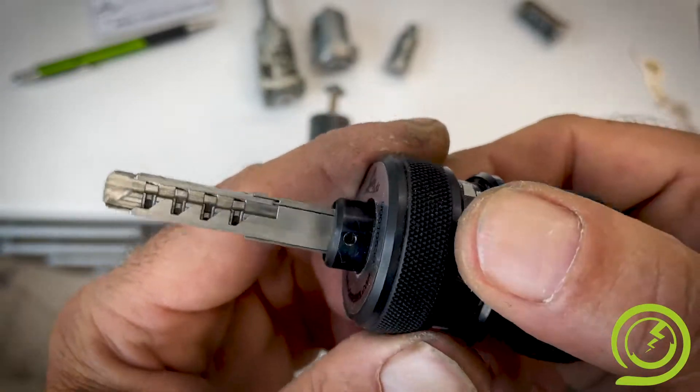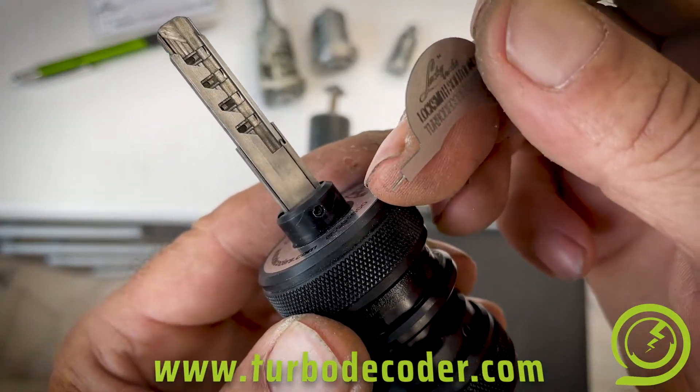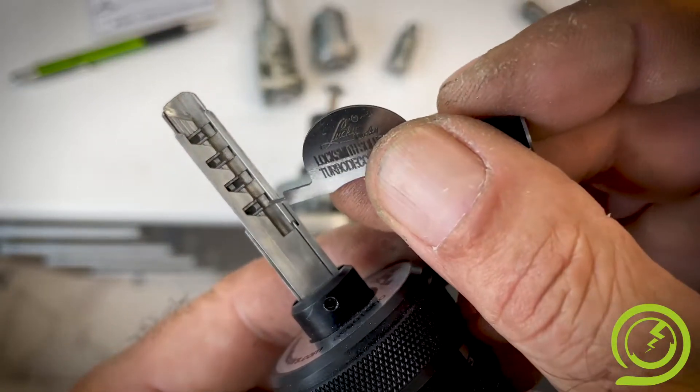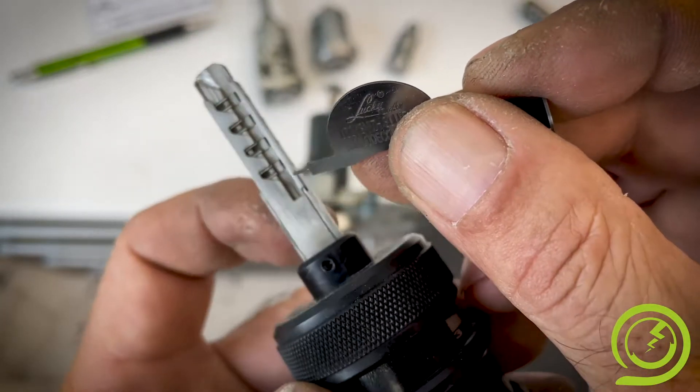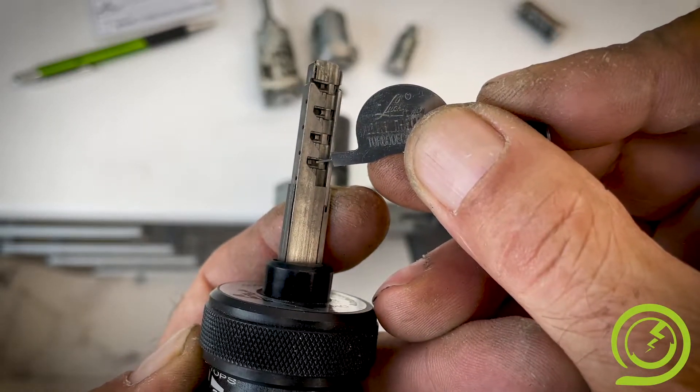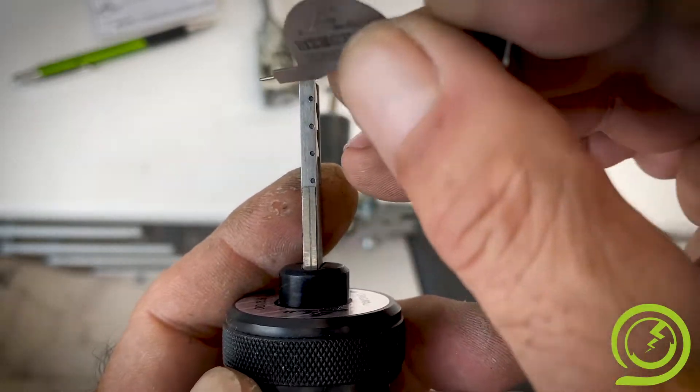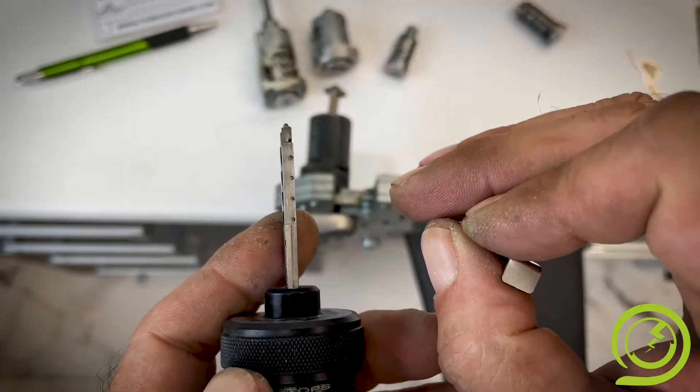The first pin you have to read is the pin which is closest to the handle. The second pin is on the other side, one step forward. Third pin is here, fourth pin is here, and so on up to the tip of the key.